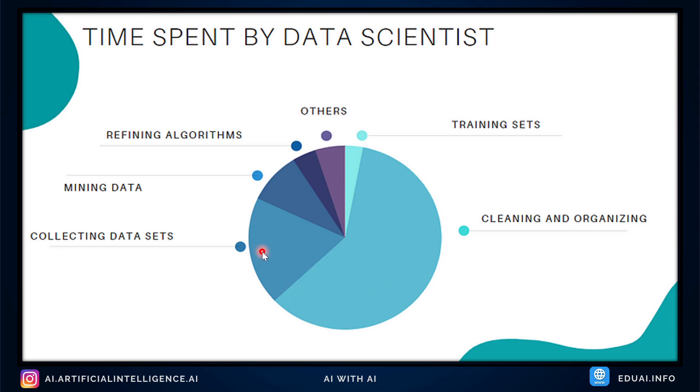Very little time is spent on refining the algorithm and training and testing your model. So once you have quality data, organized data, pure data, then it becomes very easy for you to create high-quality, accurate models. When feature engineering activities are done correctly, the resulting dataset is optimal and contains all the important factors that affect the business problem.